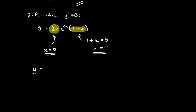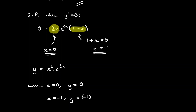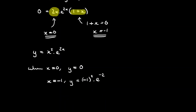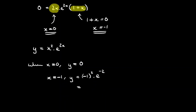We need to substitute these back into the original function y equals x squared times e to the 2x to find the y-coordinates. When x equals 0, y equals 0 squared, which gives us 0. When x equals negative 1, y equals negative 1 all squared times e to the power of negative 2, and since negative 1 squared is positive 1, we get e to the power of negative 2. So our two stationary points are the coordinates (0, 0) and (−1, e to the power of −2), or equivalently 1 over e squared.